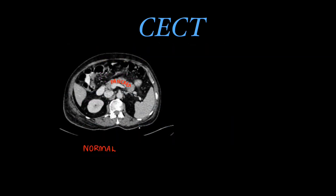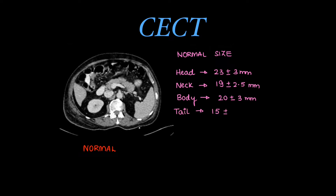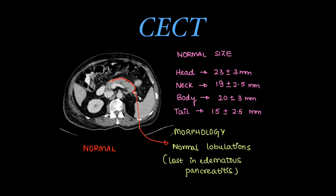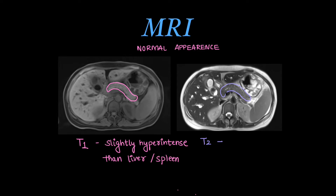On CECT, the normal pancreas is positioned anterior to the portal vein. Normal size criteria: head 23 ± 3 mm, neck 19 ± 2.5 mm, body 20 ± 3 mm, and tail 15 ± 2.5 mm (per Haga imaging references). Normal lobulations are seen in the pancreas, which are lost in edematous pancreatitis. On MRI, the normal pancreas appears slightly hyperintense on T1 compared to liver and spleen due to enzymes, and slightly hyperintense on T2 compared to paraspinal muscles.